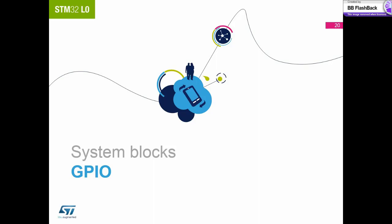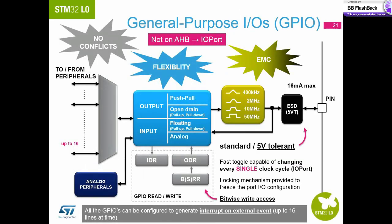Let's now take a look at the GPIOs. The GPIOs of the STM32L0 are very similar to all other STM32s, with the exception of how they are connected to the core. On the STM32L0, they are connected via the ARM I/O port and not the AHB as used previously. This provides fast toggle on every single clock cycle. Most of the pins are 5V tolerant and can be programmed as an alternate function or into multiple input-output modes. We also have the ability to lock or freeze the I/O configuration for sensitive or critical parts of applications.